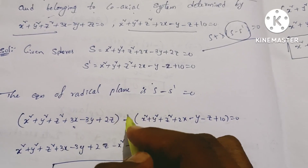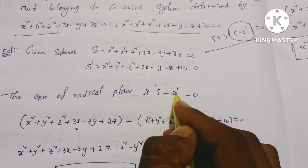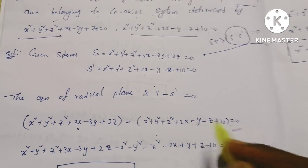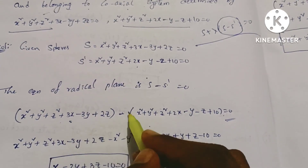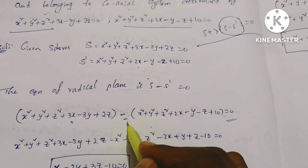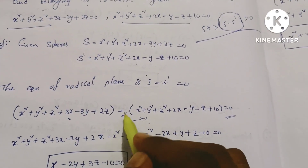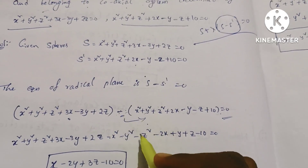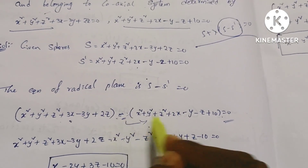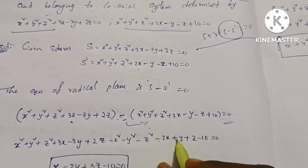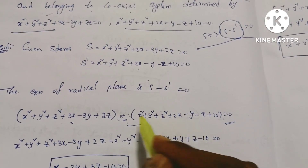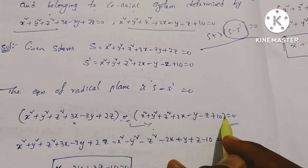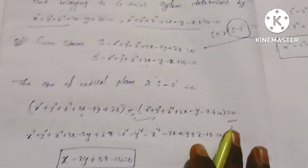The radical plane is given by S minus S dash equal to 0. The first sphere equation minus the second sphere equation equals 0. So we compute: X squared minus X squared, minus Y squared, minus Z squared, with terms: minus into minus giving plus Y, minus into minus Z giving plus Z, minus into plus 10 and minus 10.